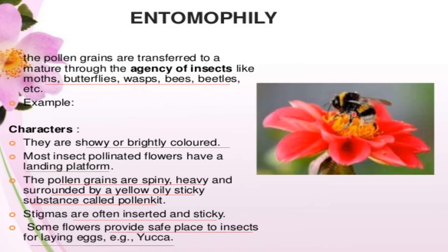Entomophily involves transfer of pollen grains through the agency of insects like moths, butterflies, wasps, bees, beetles, etc. Characteristics: flowers are showy or brightly colored; most insect-pollinated flowers have a landing platform; pollen grains are spiny, heavy, and surrounded by a sticky yellow oily substance called pollen kit; stigmas are often inserted and sticky; some flowers provide a safe place for insects to lay eggs.